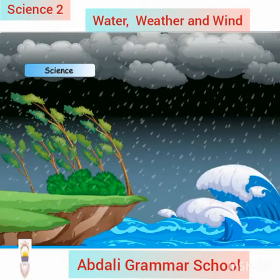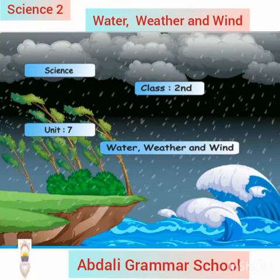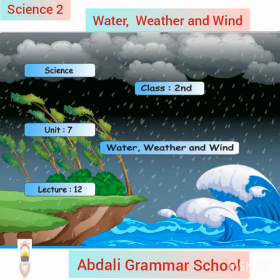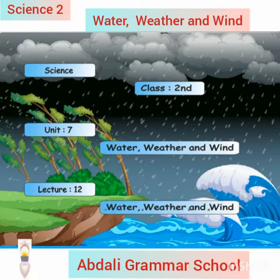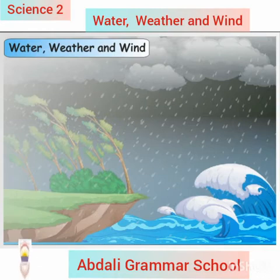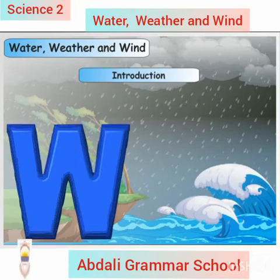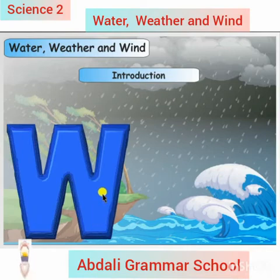Science class, second unit number seven: Water, Weather and Wind. Lecture number 12: Water, Weather and Wind introduction. Three very important things on the earth start with the letter W.